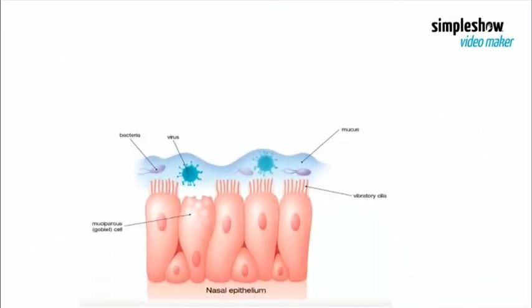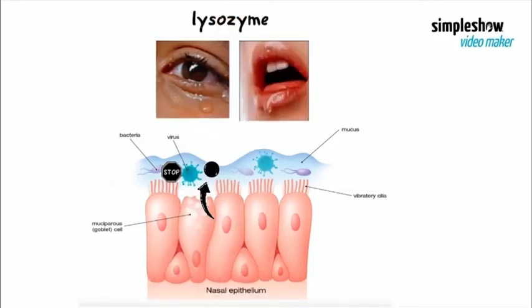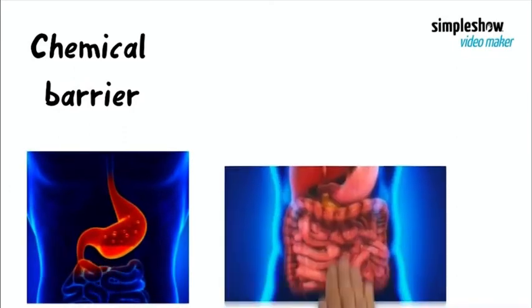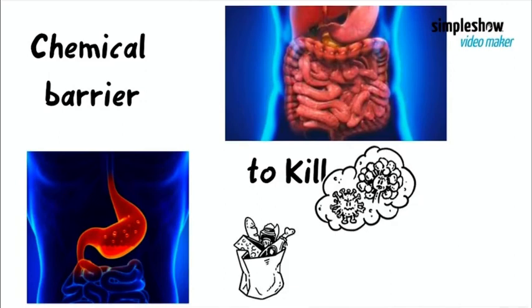Our epithelial surface is more than a mechanical barrier to infections. It also secretes many enzymes and proteins that work as a chemical barrier and inhibit microbial growth. For example, the antibacterial enzyme lysozyme is secreted in tears and saliva. Other examples of the chemical barrier are the acids in the stomach and the digestive enzymes of the upper gastrointestinal tract, which can deal with microorganisms in food and water.